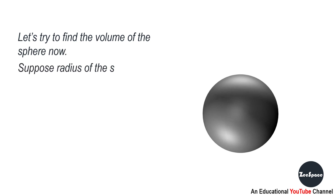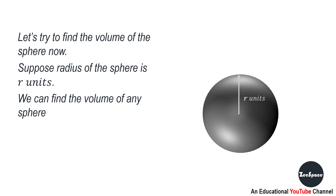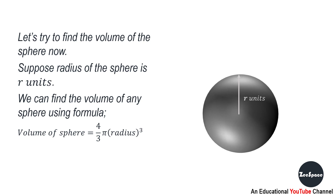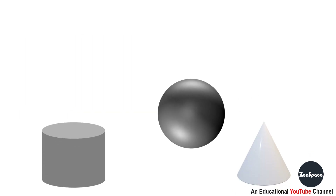Let's try to find the volume of the sphere. Suppose the radius of the sphere is R units. We can find the volume of any sphere using the formula: volume of sphere equals 4/3 times pi times r cubed. Hence, the volume of this sphere equals 4/3 pi r cubed.